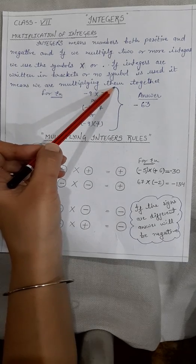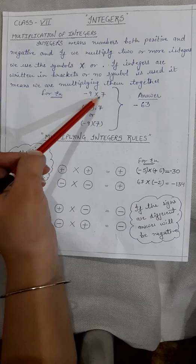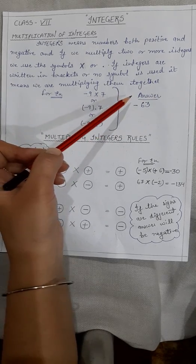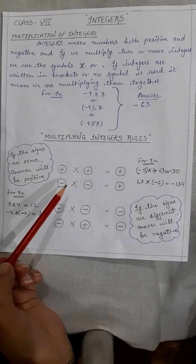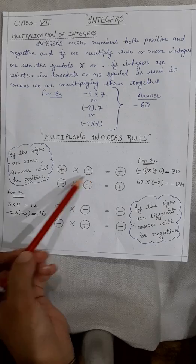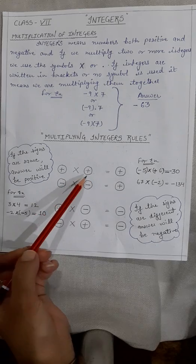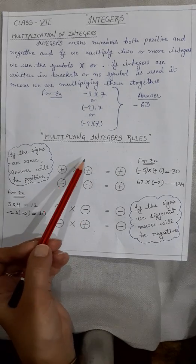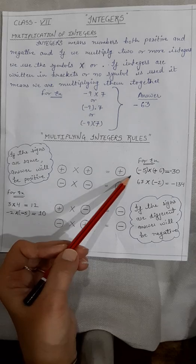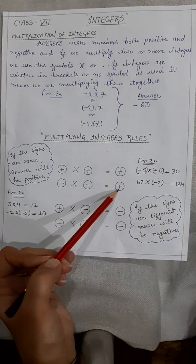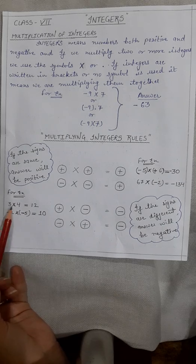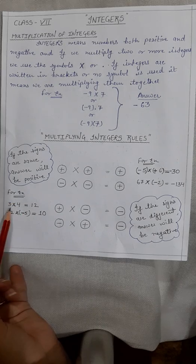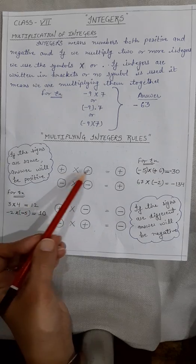For example, minus 9 multiplied by 7, the answer is minus 63. For that, you have to keep in mind these rules: if you are multiplying two integers having the same sign, you multiply those numbers first and then the sign will be positive. For instance, 3 into 4 is 12, and the sign is positive because both integers are positive.